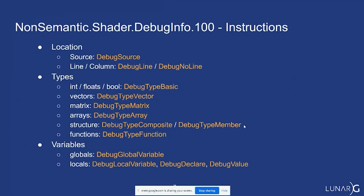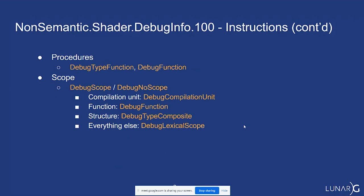There are also a couple of instructions that keep track of local variables as optimization eliminates them — using the DebugValue instruction to pin values to local variables as execution proceeds. Additionally, there are instructions that keep track of all your functions even after inlining is done and all but main has been removed, and also keeping track of scope. As you'll see in the demo, as you proceed through execution only certain variables are alive, so this helps weed out and show only the relevant local variables at any point in time.